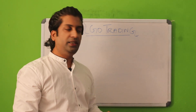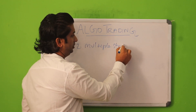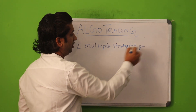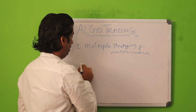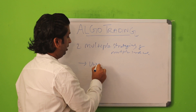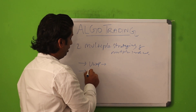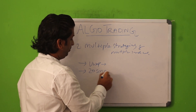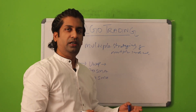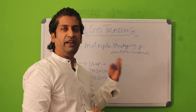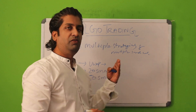The second benefit of algo trading is multiple strategies. You can give multiple indicators — for example, if you are using VWAP and if it is above VWAP it's a buy order, and you can add one more condition: it should be above 20 SMA, it should be above 50 SMA. You can give multiple conditions on the stock and you don't have to sit in front of the computer. You just give the strategies and they will work out for you.